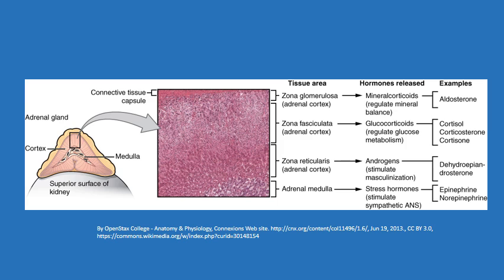Then we have the zona fasciculata, the middle layer, which produces glucocorticoids. In humans the main one is cortisol. One of cortisol's big jobs is to regulate glucose metabolism to make sure there's enough glucose in the blood to deal with whatever crisis needs to be dealt with. It also essentially coordinates the long-term stress response.